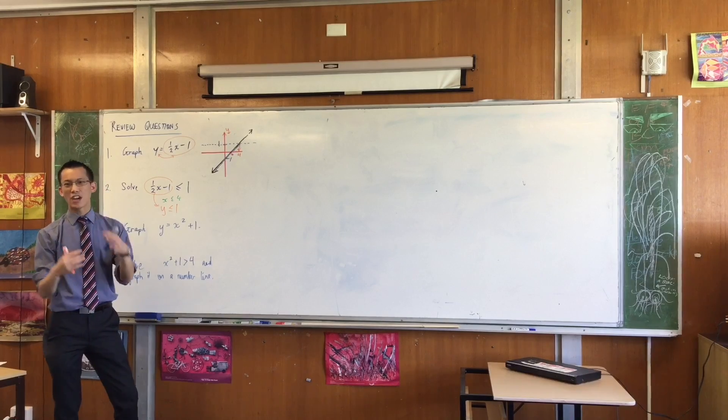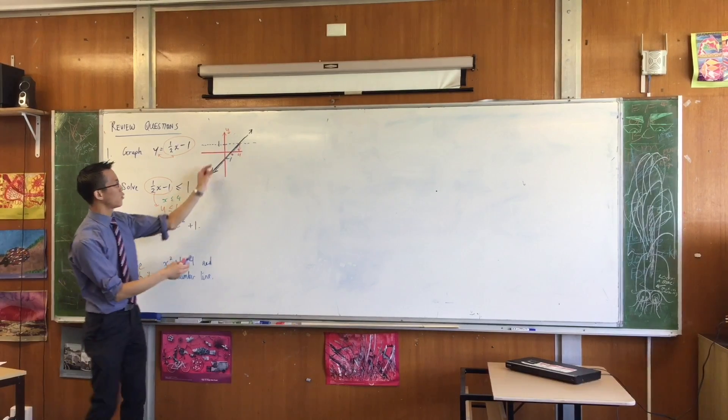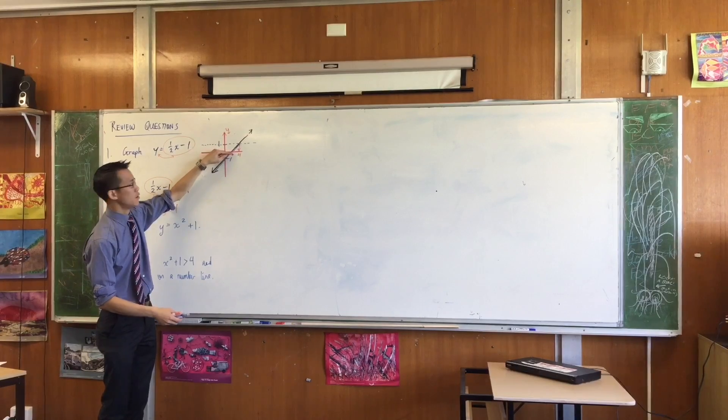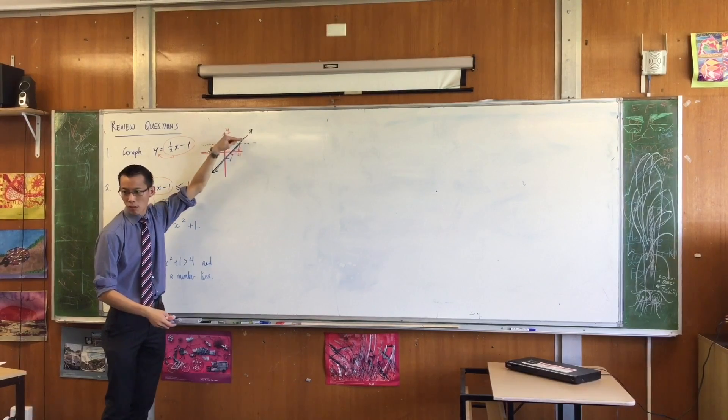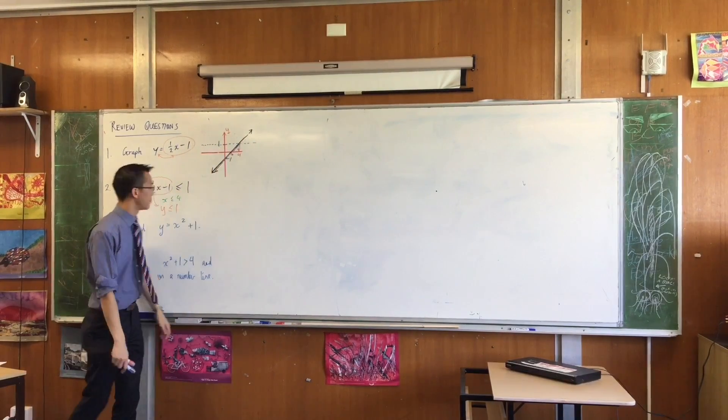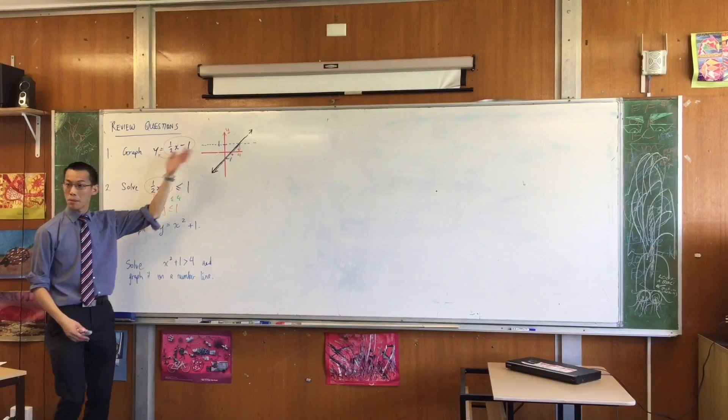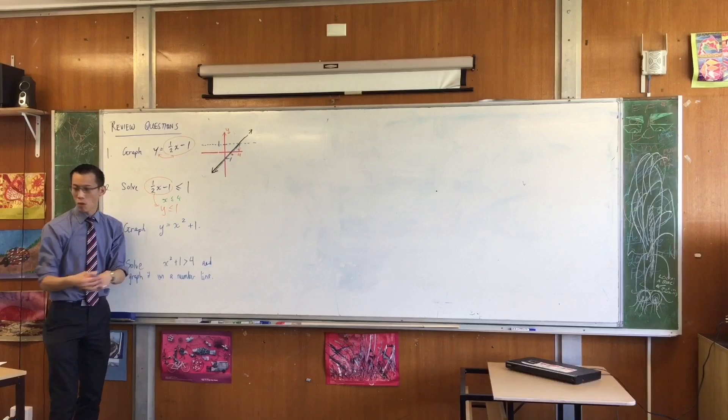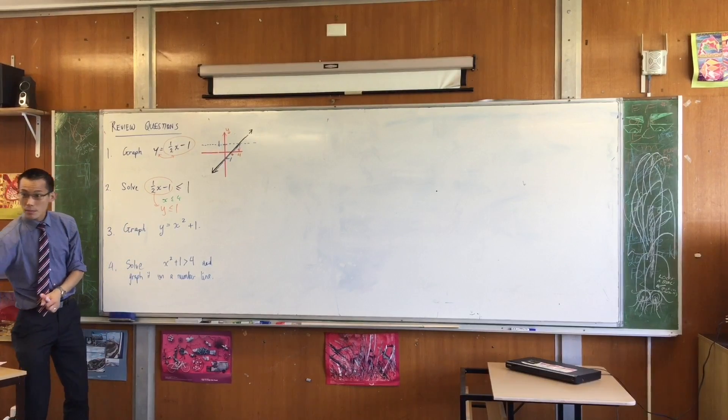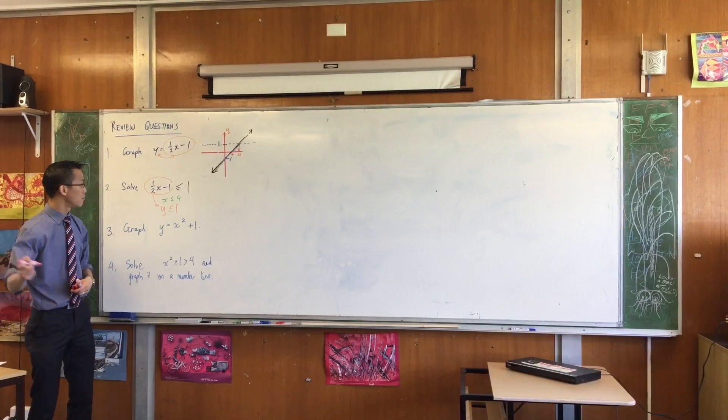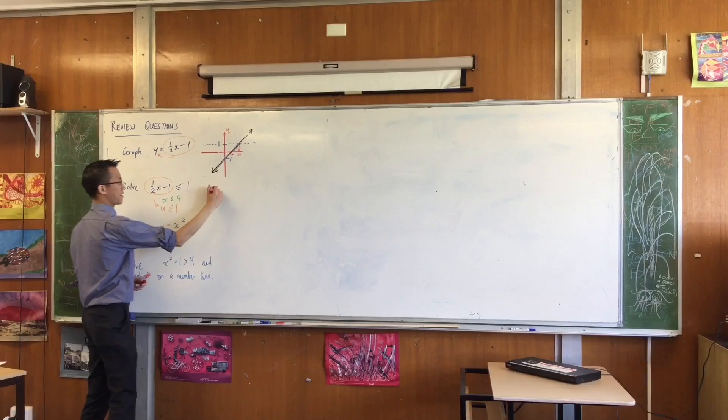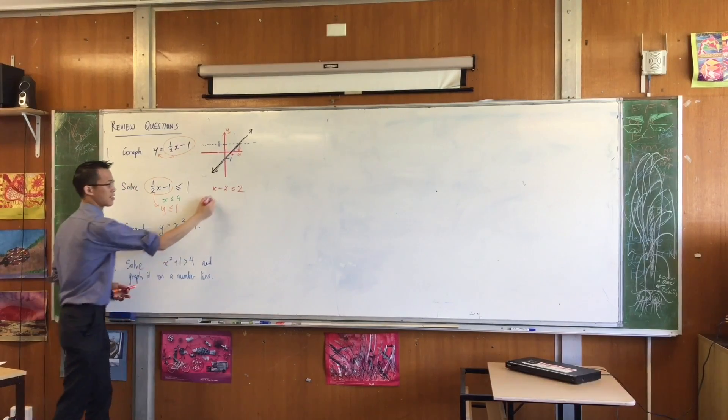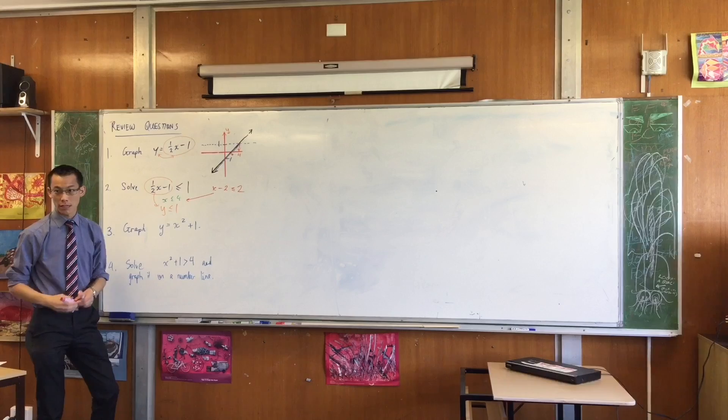You can even kind of intuit your way there by thinking the gradient here means you go across 2 up 1. Naturally, you don't have to appeal to a picture to do that. You can just do this purely by algebra. I times everything by 2. So that would make this x minus 2 is less than or equal to 2. And then you can see it's just one line to the answer.